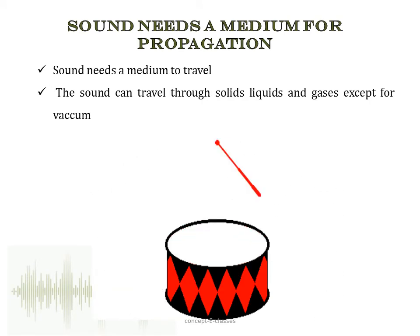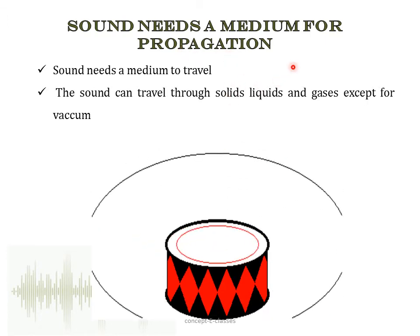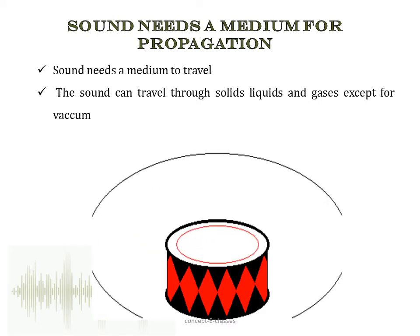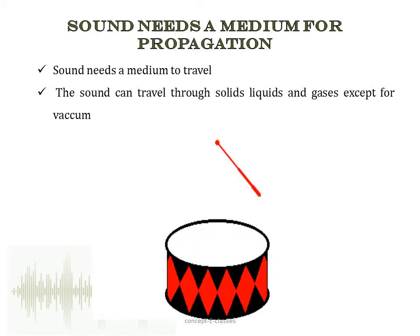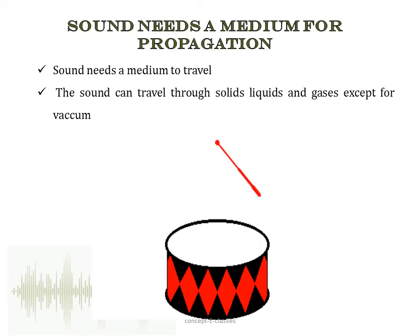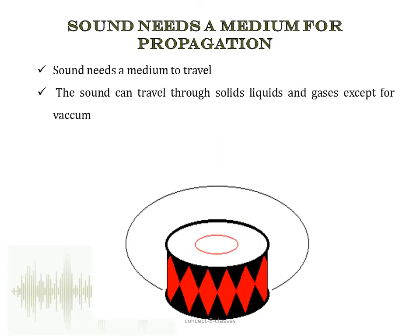The next topic is: sound needs a medium for propagation, meaning sound needs a medium to travel. It can travel through solids, liquids and gases, but not through vacuum. For example, take a glass tumbler, place your cell phone inside it and ring it — the ring can be heard. Now surround the rim of the tumbler with your hands and try sucking out some of the air. The sound becomes fainter as you suck the air out, and if you completely remove the air, you will not be able to hear any sound. So sound cannot travel in vacuum.